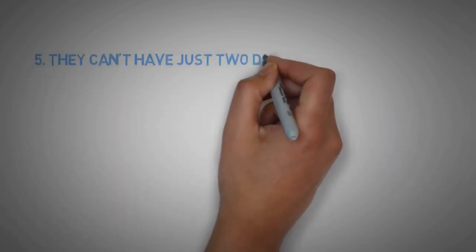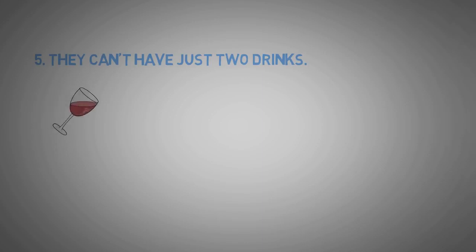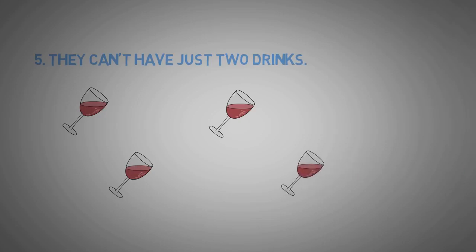5. They can't have just two drinks. An alcoholic has a problem stopping and may even finish others' drinks. Booze will never be left on the table and there is always an excuse for one more round.